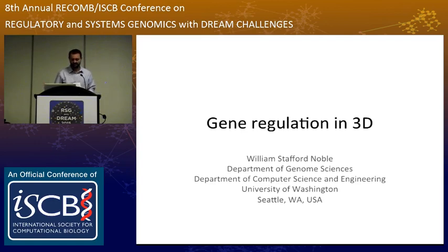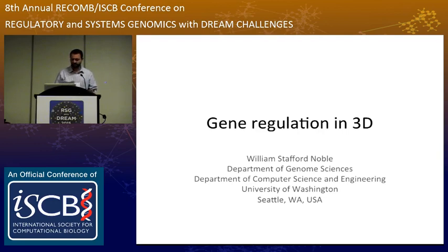He went and did his PhD at the University of California San Diego with Charles Elkin, spent some time in the Hauser lab, and then went on to be an assistant professor in the Department of Computer Science at Columbia University. In 2002, he joined the faculty at the University of Washington, in the departments of genome sciences, with an adjunct in computer science engineering. His research really focuses on applying statistical and machine learning techniques for modeling and understanding biological processes at the molecular level. Bill Noble also has an NSF career award and is a Sloan research fellow. With that, I will let Bill talk about his research.